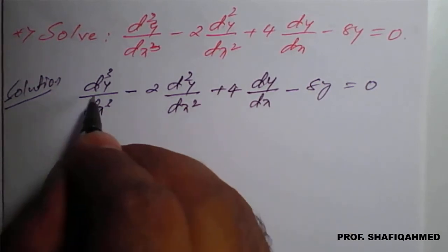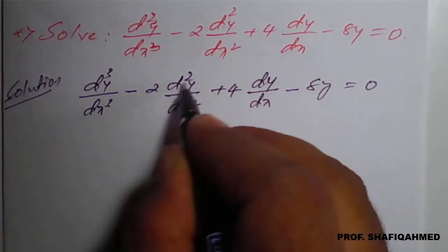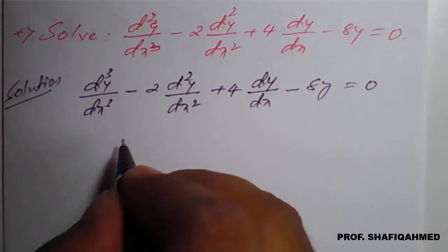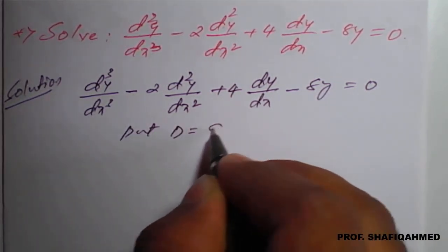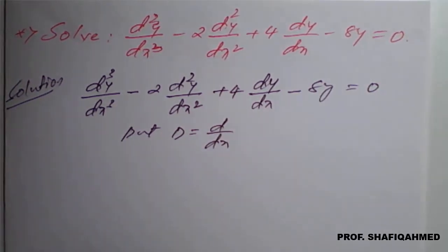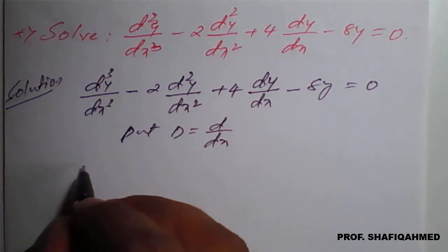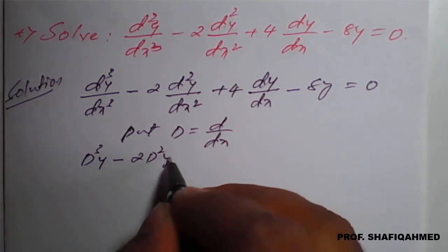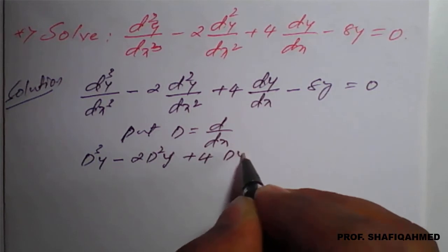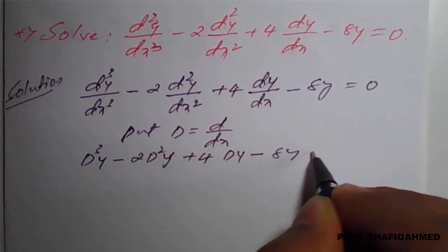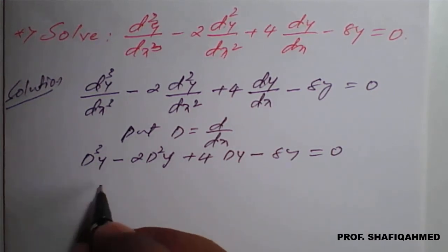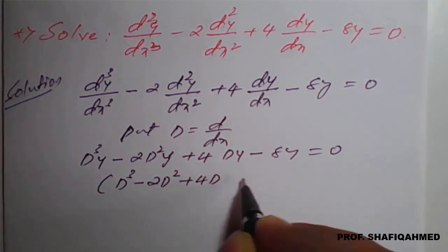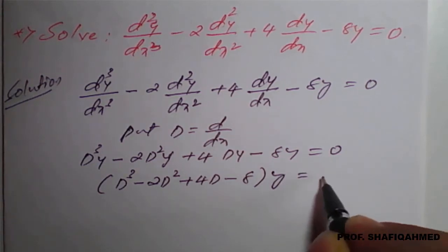Here, the terms d³/dx³, d²/dx², and d/dx — we replace these with an operator. We put D equal to d/dx. So the equation becomes D³y minus 2D²y plus 4Dy minus 8y equals 0, or taking D common: (D³ minus 2D² plus 4D minus 8)y equals 0.